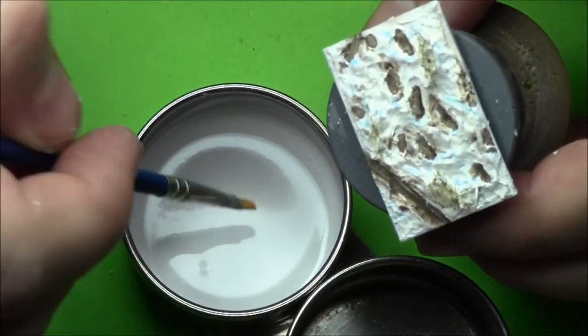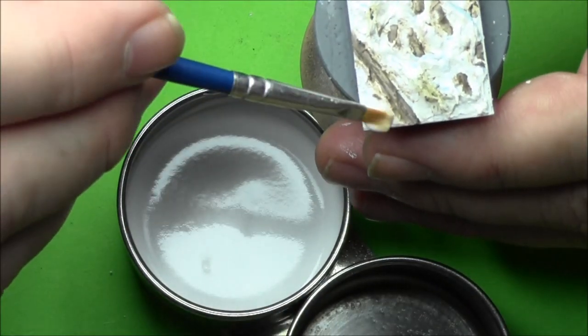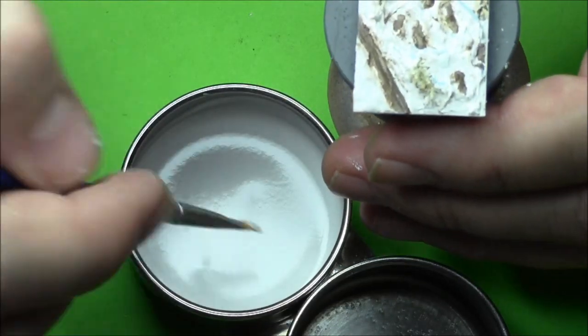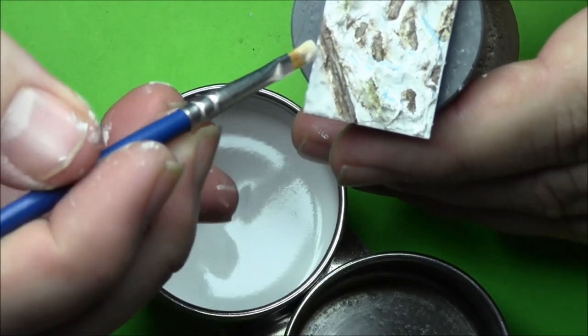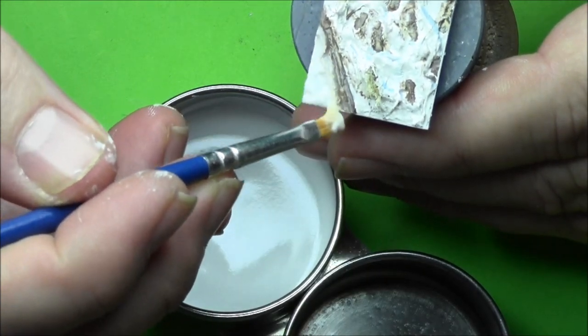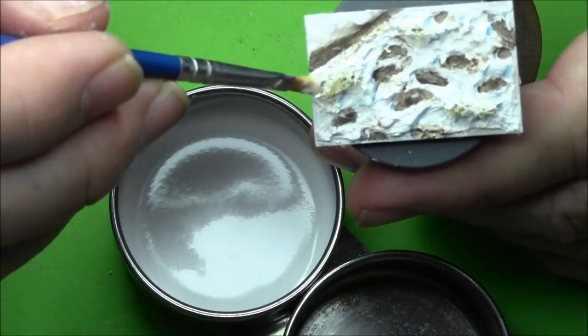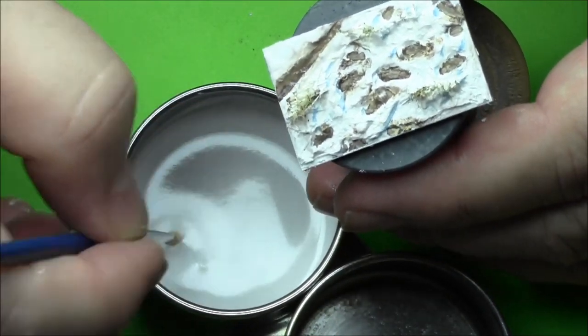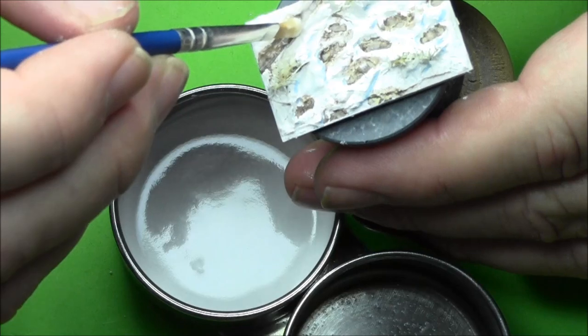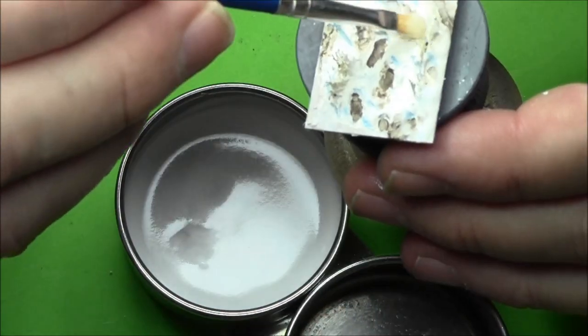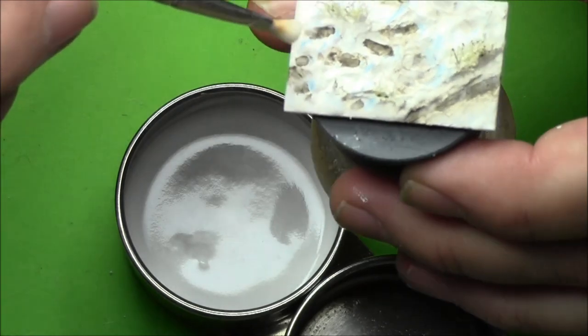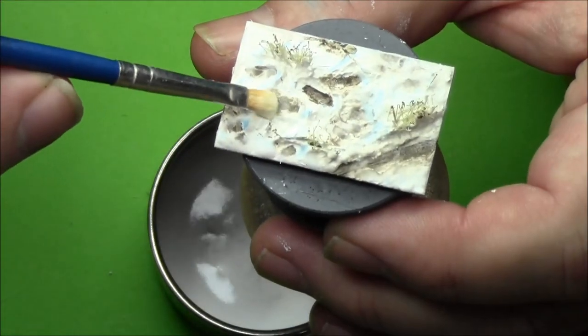Now I'll apply the snow gel. You see it's nice and thick now. Just use a flat tip brush. I'm going to put it on a little thicker around the disturbed areas. I'm going to put it nice and thick to the sides of that wheel rut there.